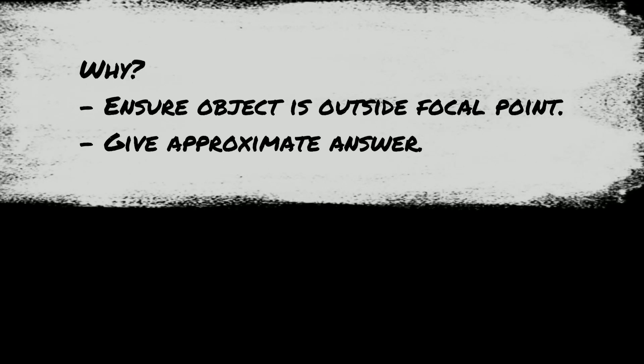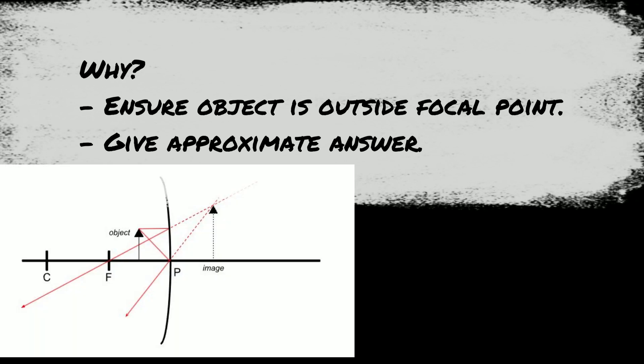Why do we do this? Well, very simply, we want to ensure the object is outside the focal point. If it's inside the focal point, it'll do a virtual image which won't form on a screen. Secondly, it's really good to have an idea of what the answer should be before you crack into an experiment.